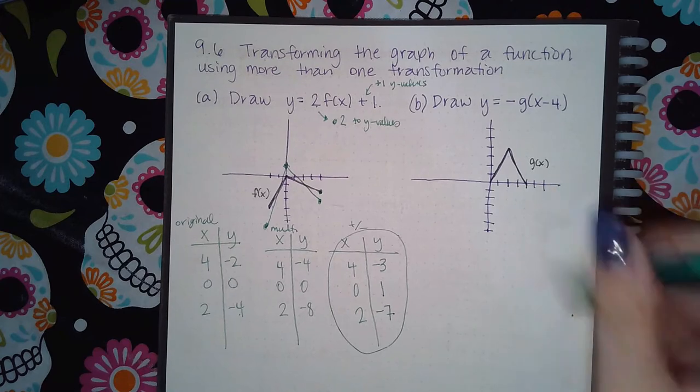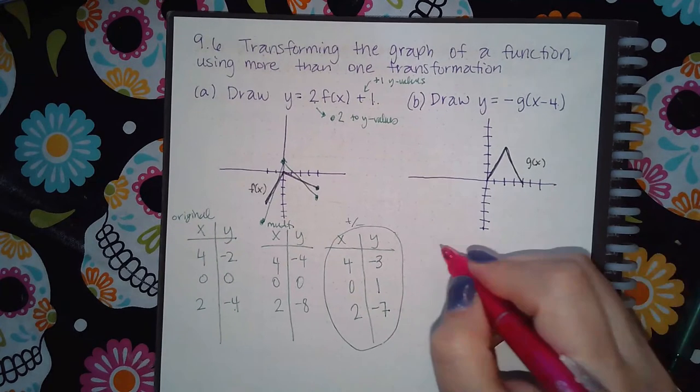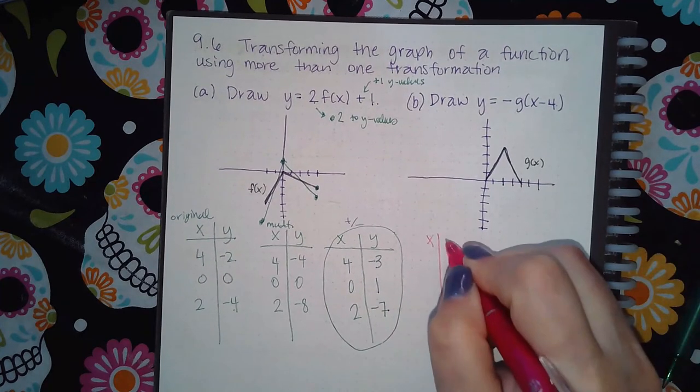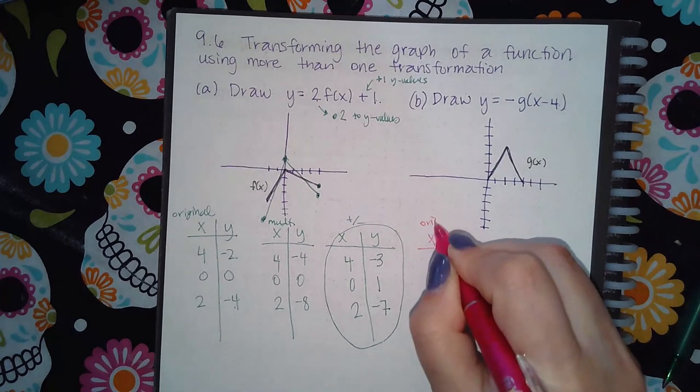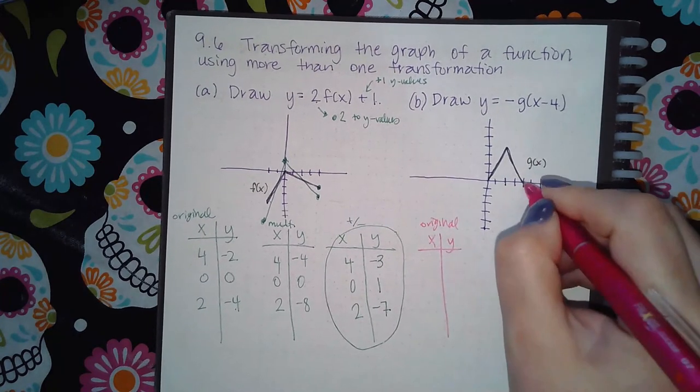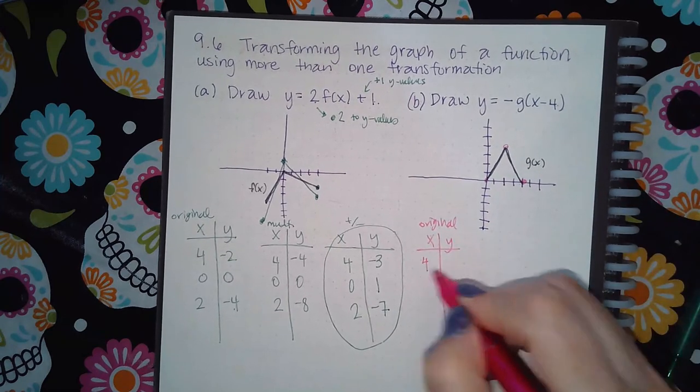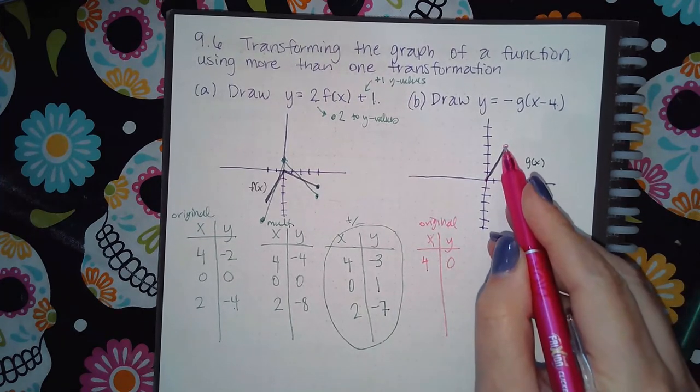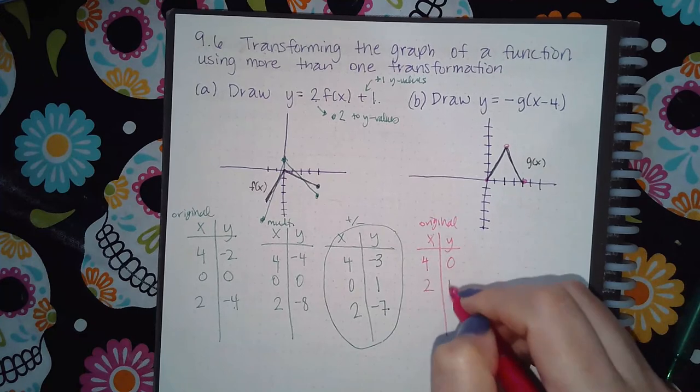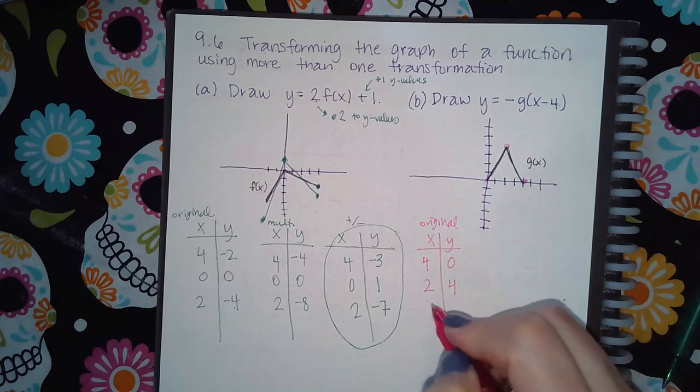Now we're going to do the same thing over here. I'll use a different color. So the first thing I'm going to do is the original points. So this one, this one, and this one. So these coordinates are four and zero. These coordinates are two and four. And then these coordinates are zero, zero.